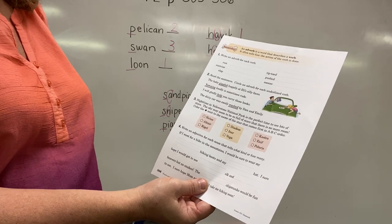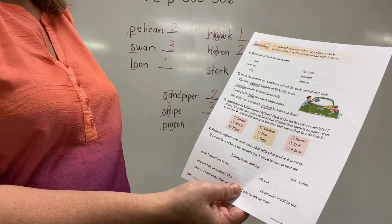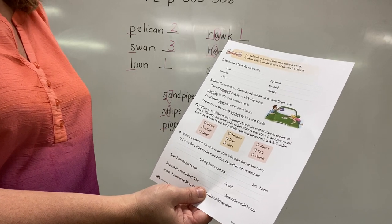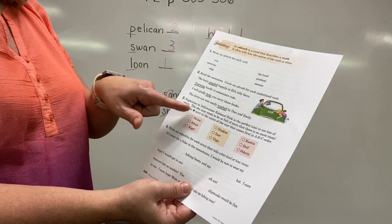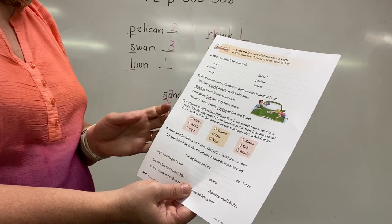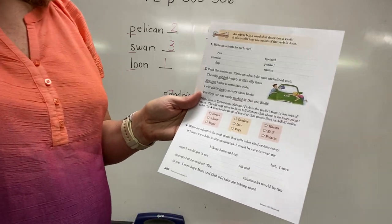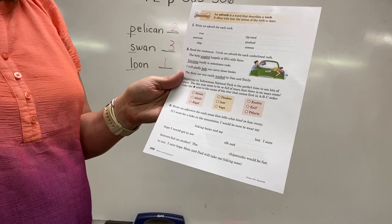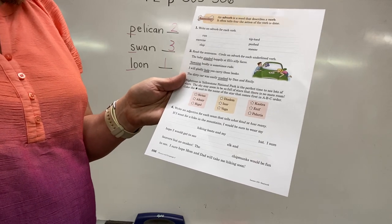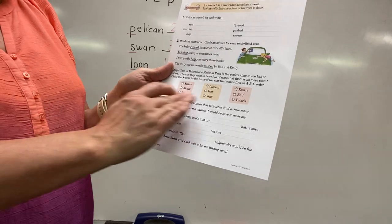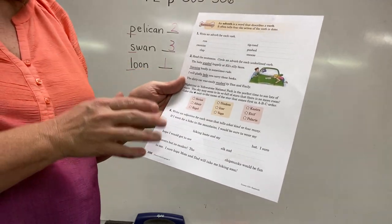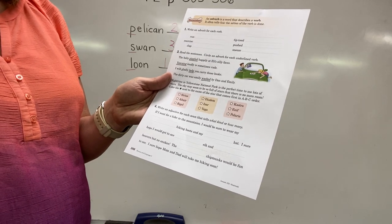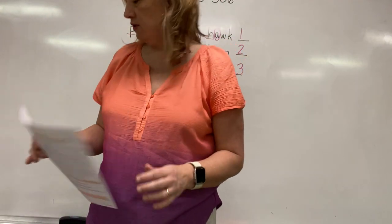Section three: nighttime in Yellowstone Park is the perfect time to see lots of stars. The sky may seem so full of stars that there's no more room. Color the star next to the name of the star that comes first in ABC order - look at the three words and color in the star that comes first. Section four: write an adjective for each noun that tells what kind or how many. Fill in the adjectives to describe the nouns in the paragraph.